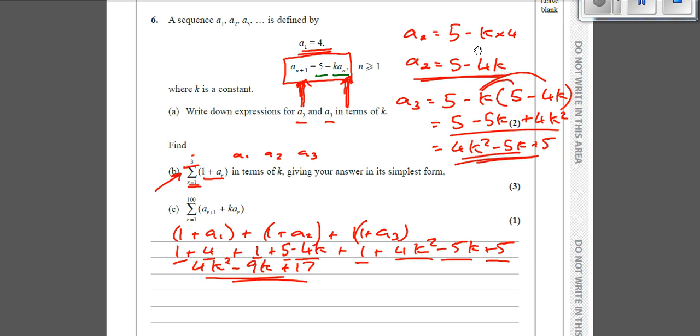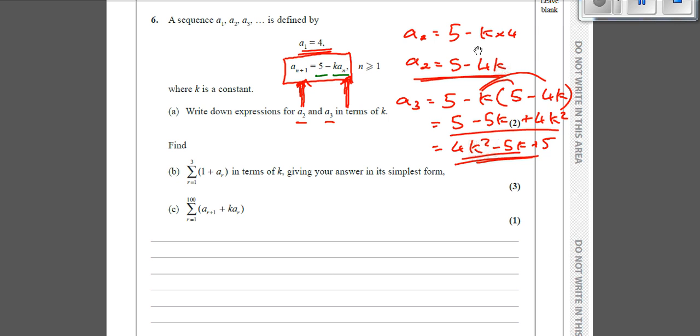Now the next one looks horrendous. But if we just take it nice and steadily, it's not awful. So what we've got to do is add up from 1 to 100, a_{r+1} plus k lots of a_r. So if this is our current term, this is going to be the term afterwards. So if we start off with r equals 1, that's going to be a2 plus k lots of a1.